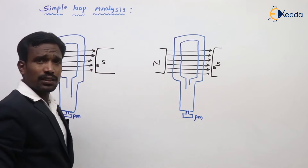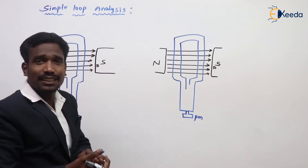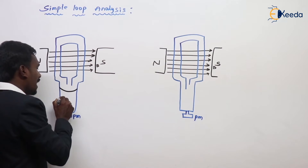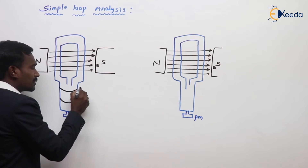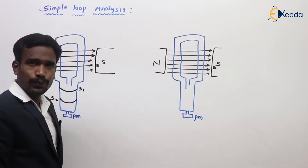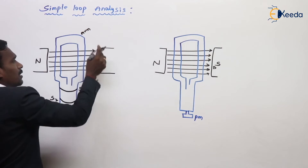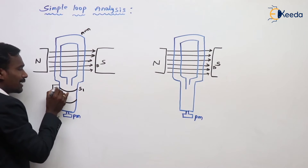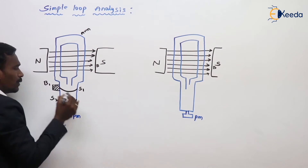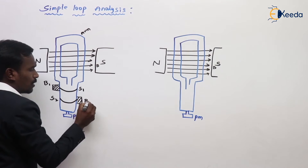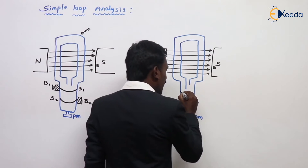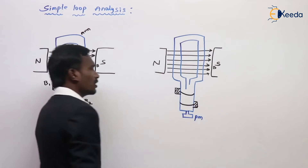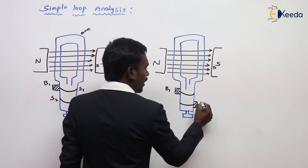But this is a rotating part. We have to collect that EMF, we have to collect that current. How can we collect that current? By using the slip rings and brushes. This is slip ring 1 and this is slip ring 2. This is my field coil winding. Slip ring 1 and slip ring 2 are connected to brushes — brush 1 and brush 2.